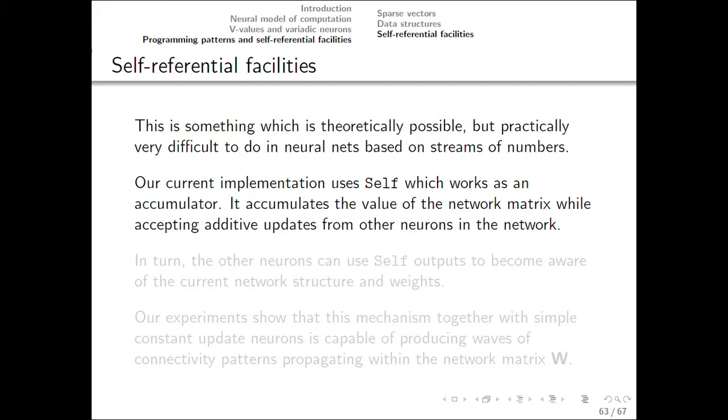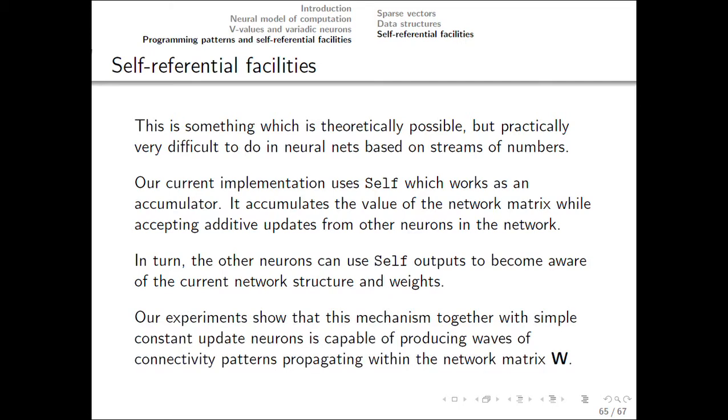Our current implementation uses self which works as an accumulator. It accumulates the network additive updates from other neurons. And in turn other neurons can use self-outputs to become aware of the current network configuration. And our experiments show that this mechanism together with simple constant update neurons are capable of producing waves of connectivity patterns propagating within the network matrix.